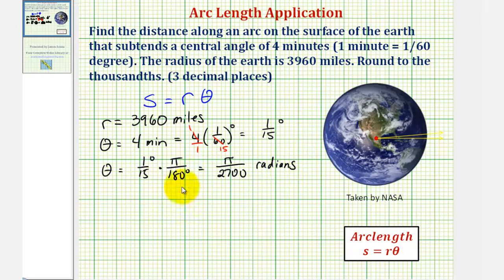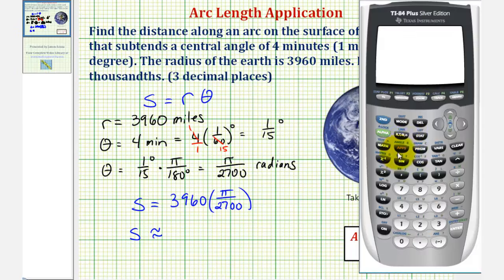Which means your arc length s is equal to three thousand nine hundred sixty miles times pi divided by two thousand seven hundred radians. And now we'll go to the calculator. So we have three thousand nine hundred sixty times pi divided by two thousand seven hundred.